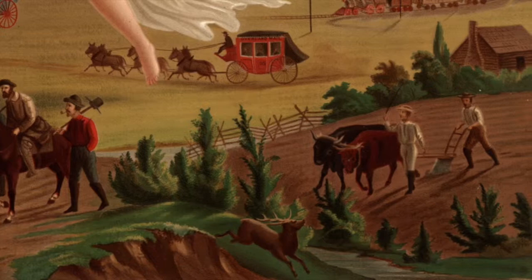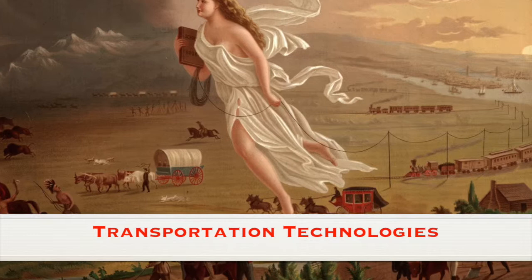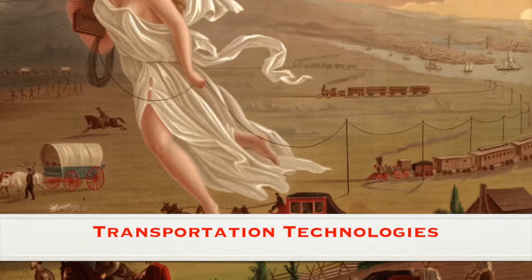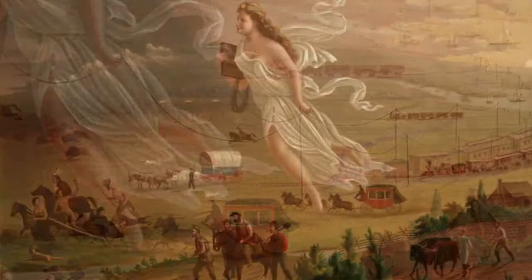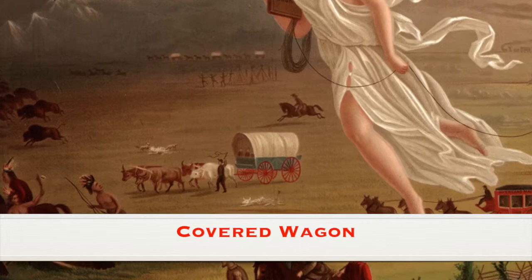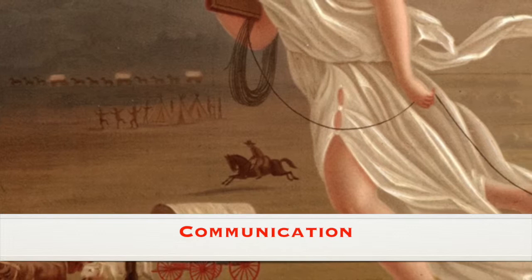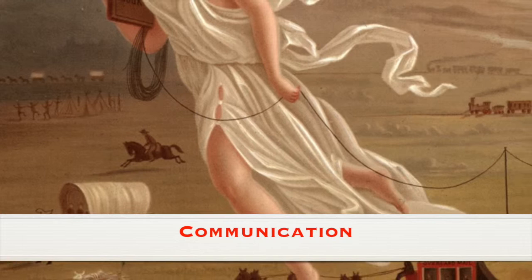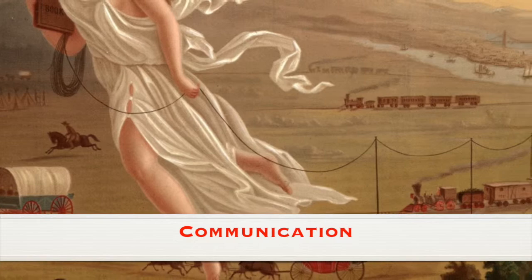The horse-drawn stagecoach is a historical reminder of one of the early forms of transportation. The background depicts steamboats on a river or canal, and there are three railroad lines off in the distance. The covered wagon, or prairie schooner, reflects the settlers' transportation method along the Oregon Trail and the Santa Fe Trail. A lone rider in the background behind the wagon represents the communications system via the Pony Express, which was replaced by the first telegraph line and Morse code, represented by the telegraph lines.